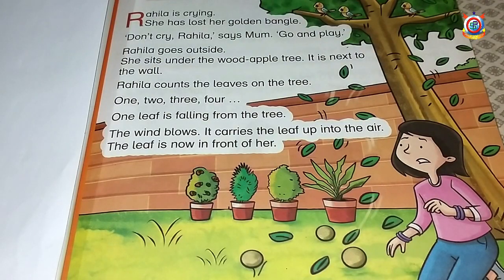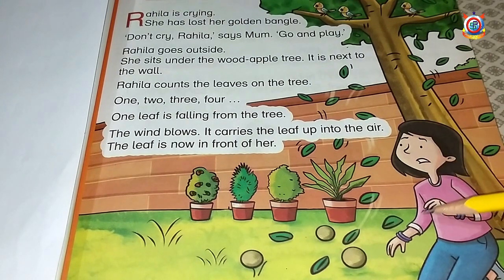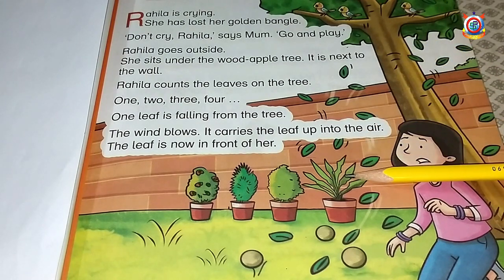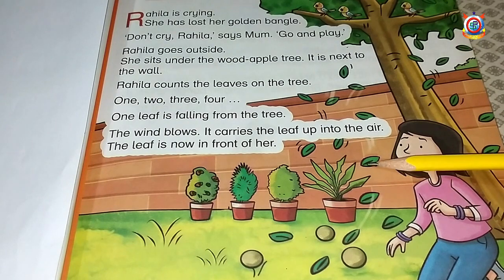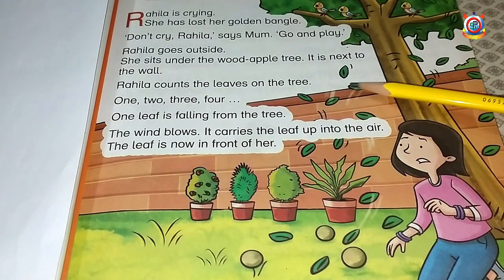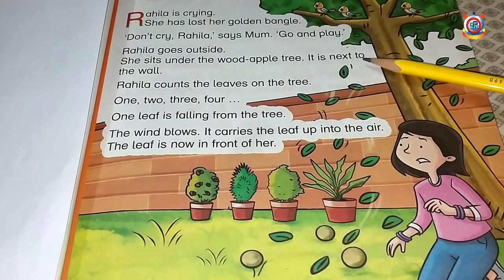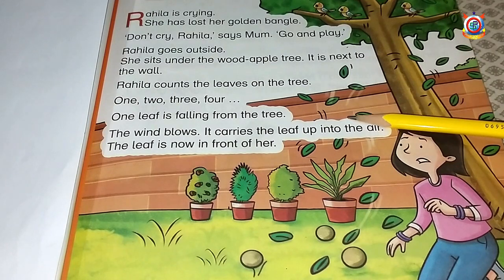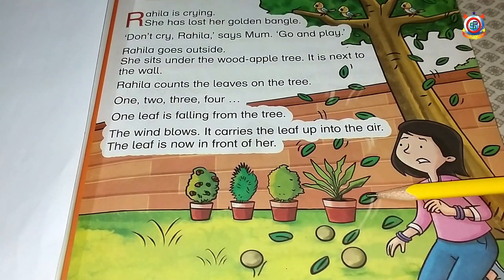In the previous video class, we studied that Rahila is crying because she has lost her golden bangle. Rahila goes out and sits under the wood apple tree. Rahila counts the leaves on the tree. One leaf is falling from the tree — the wind blows and carries the leaf up into the air. The leaf is now in front of her.